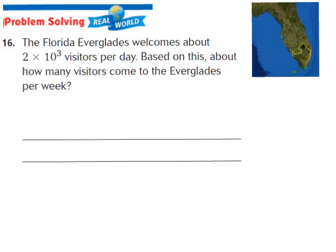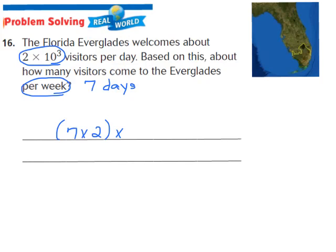Let's take a look at question number 16, one of our real-world problem-solving questions. It says: The Florida Everglades welcomes about 2 times the third power of 10 visitors per day. About how many visitors come to the Everglades per week? We know that in one week there are seven days, so this becomes 7 times 2 times the third power of 10. I'm going to use my basic fact and patterns to solve this problem.